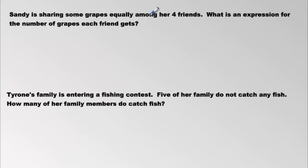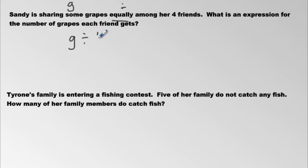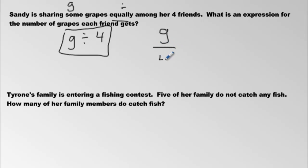Sandy is sharing some grapes equally among four friends. What is an expression for the number of grapes each friend gets? We don't know how many grapes she has, so we call it G. Sharing means division, so we take the grapes and divide by four. We can write it as G divided by four, or as a fraction: G over four. That's our expression.